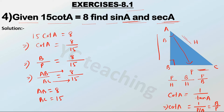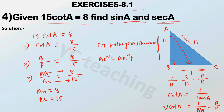Now we have to find the value of AC. We have to apply the Pythagoras theorem. By Pythagoras theorem, AC square is equal to AB square plus BC square.